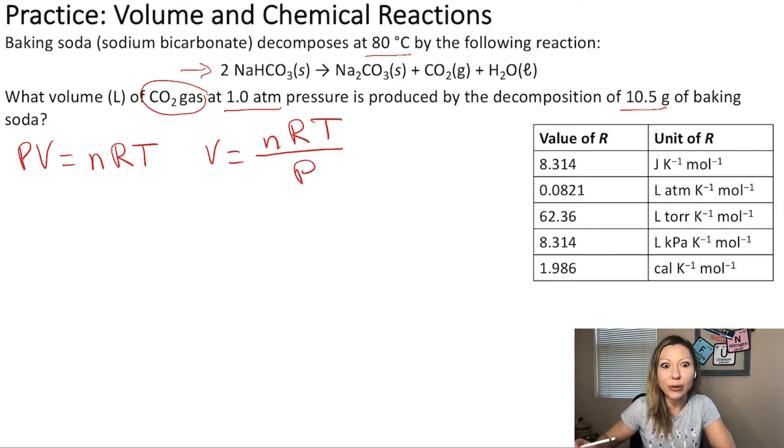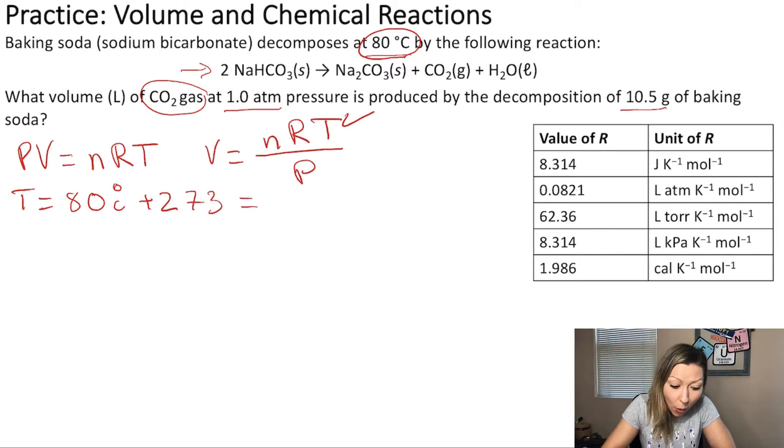So, let's take a look at all the variables. Do we have the temperature given to us? Yes, we do. We are at 80 degrees Celsius. So, T, temperature, equals 80 degrees Celsius, which we can convert into Kelvin by adding to it 273, which is going to give us 353 Kelvins.